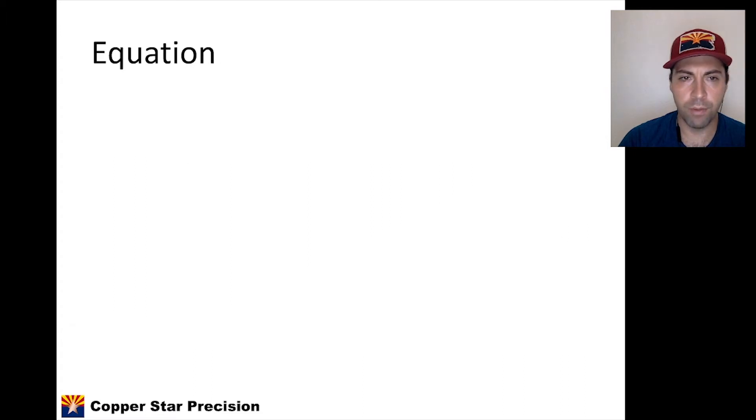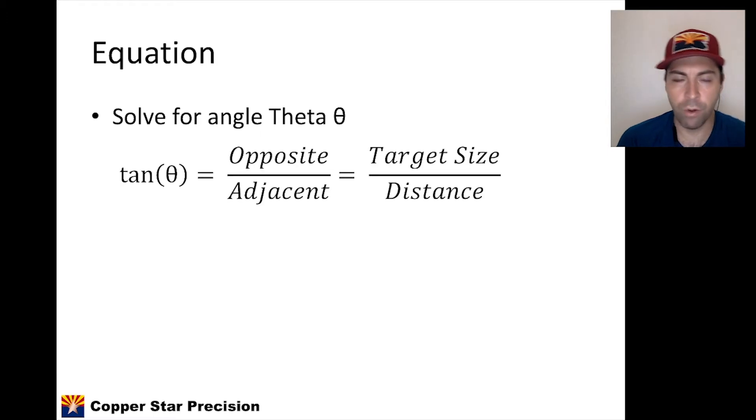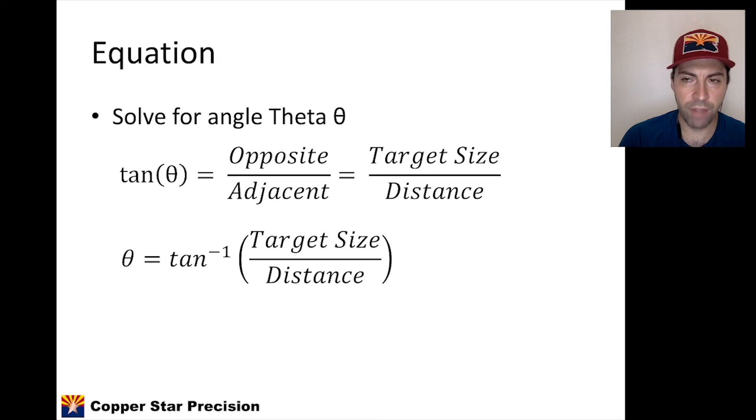Setting up the equation, we're going to solve for the angle theta, which is denoted by that symbol. Remember from the last video or from your high school geometry trigonometry classes, that tangent of an angle theta is equal to the opposite side over the adjacent side. So in this case, it's going to be the target size over the target distance. It's going to be important that both of those are in the same units. So if we solve for theta, we're actually solving for that angular measurement. To solve for theta, we just rearrange the terms. The angle is equal to the inverse tangent of the target size over distance. And then we're going to convert that angle theta into either MOA or mils.